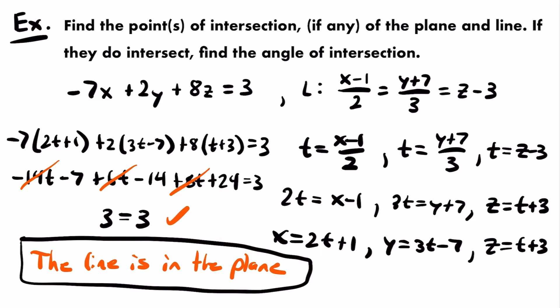Since the line is in the plane, there are infinitely many points of intersection. The final answer is that the line lies in the plane. Regarding the angle of intersection: since the line is contained in the plane, the angle would technically be 0 degrees or 180 degrees, but that's essentially assumed and doesn't need to be specified separately.